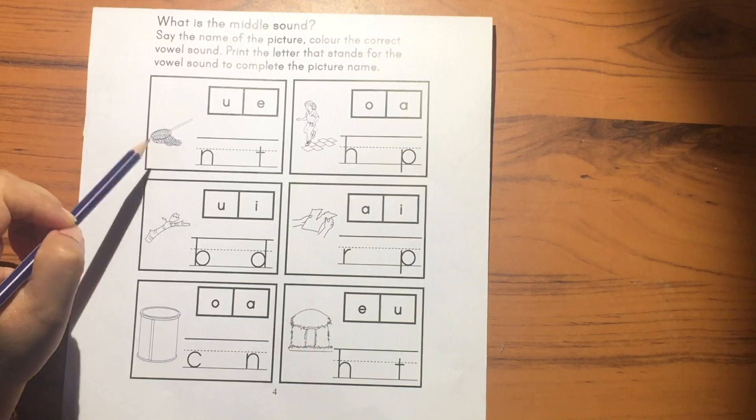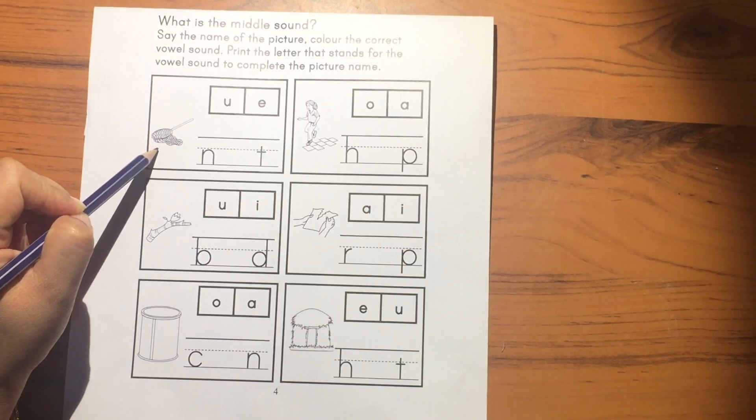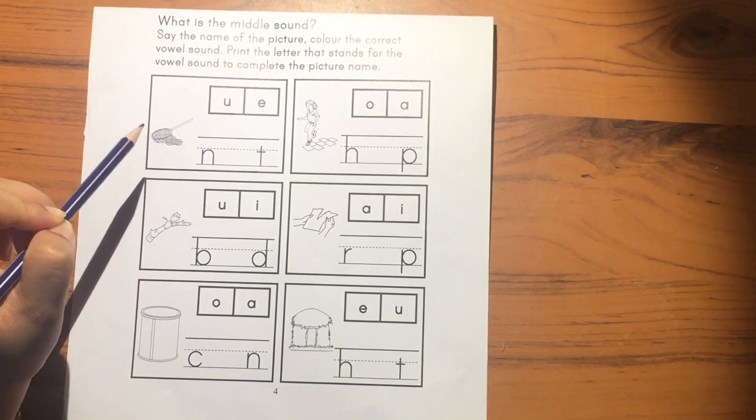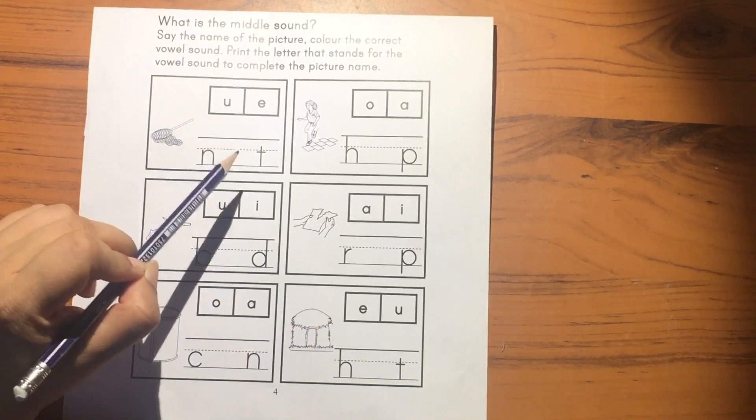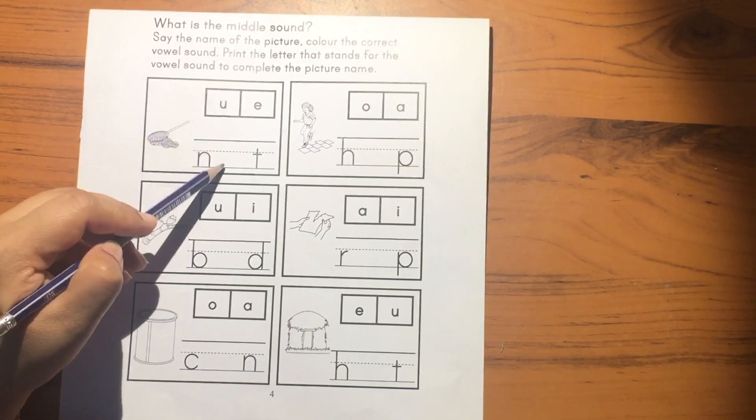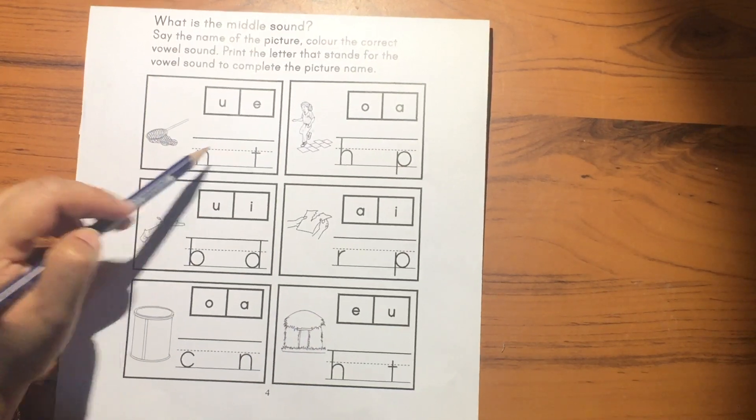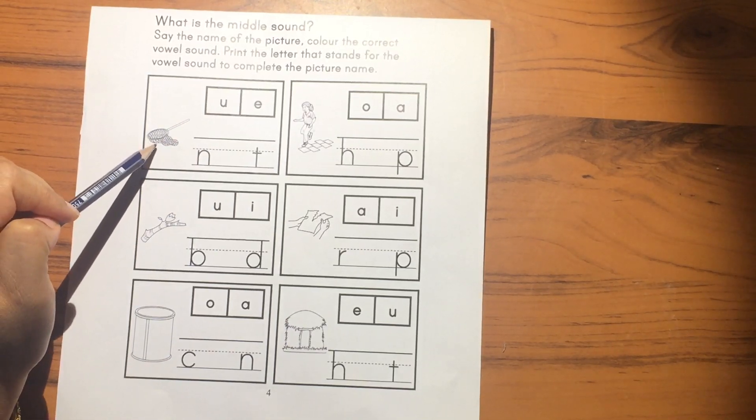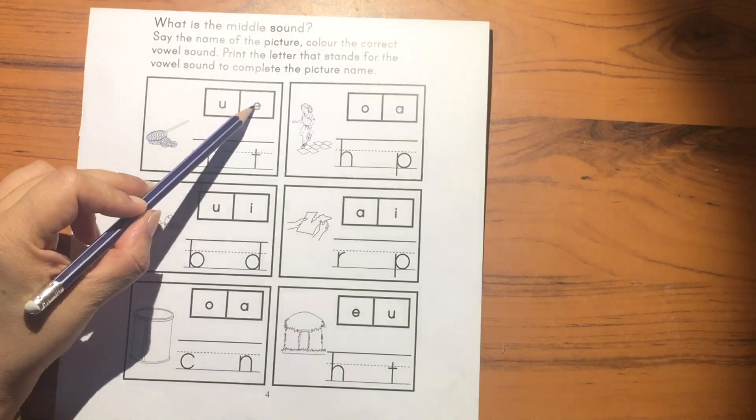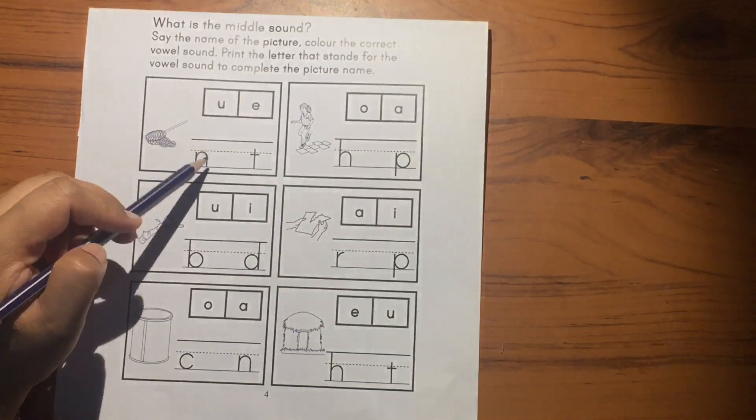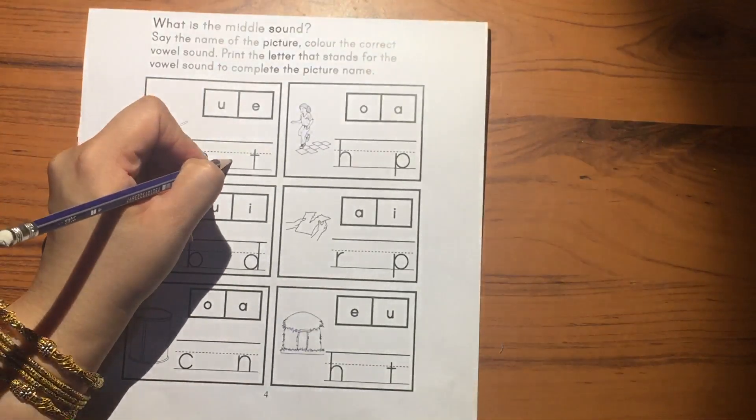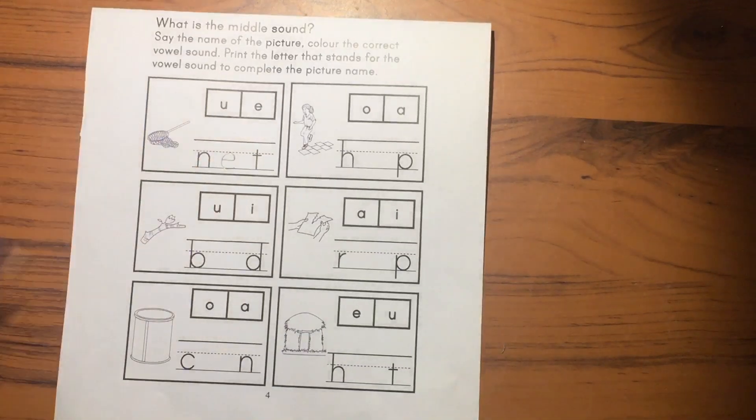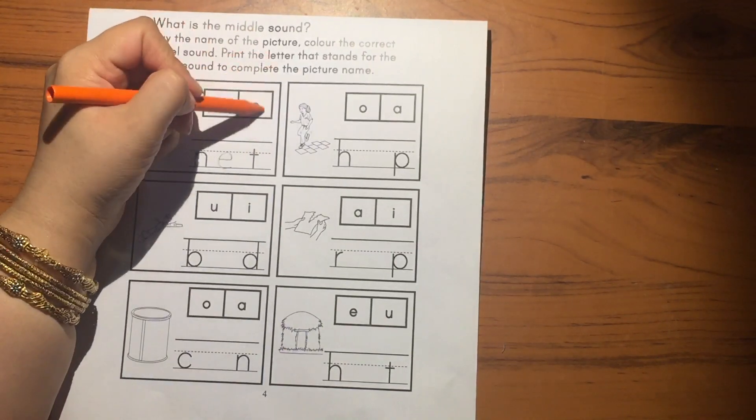So what is this? The picture name is net. Now what vowel is coming in this? If we write U here, it will become nut, so it's wrong. We want to make the word net. E is the correct vowel which we have to write here. Net. And then you will color the E vowel.